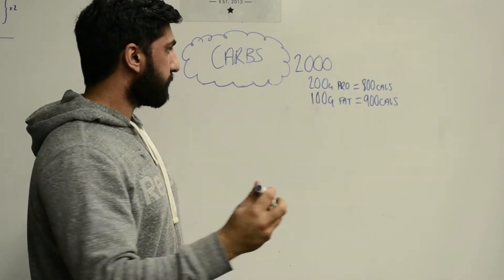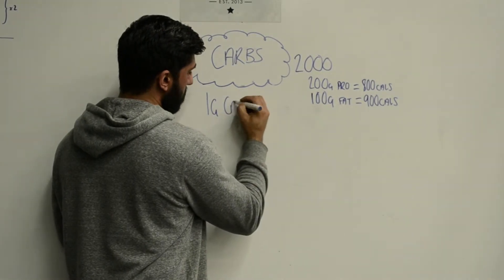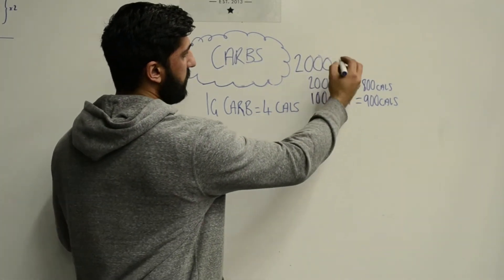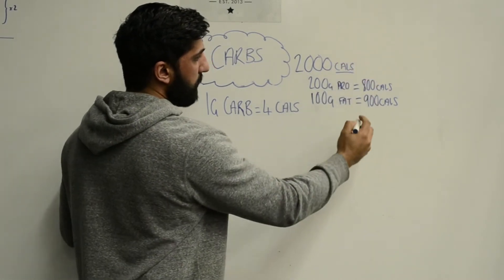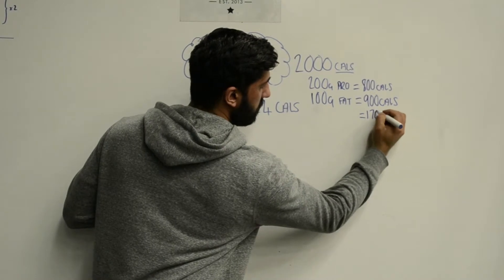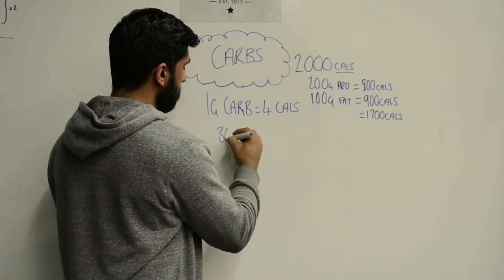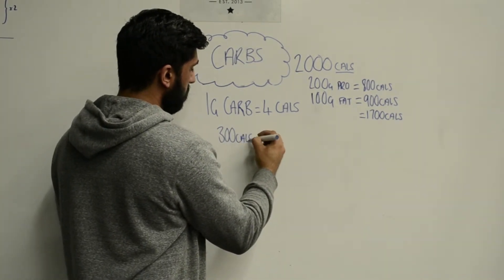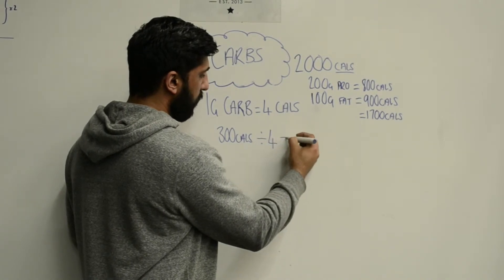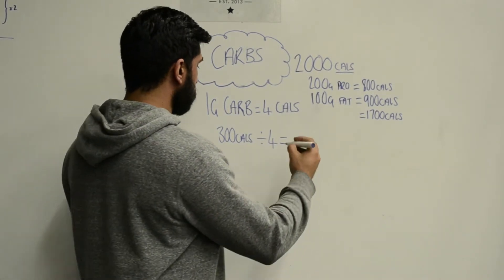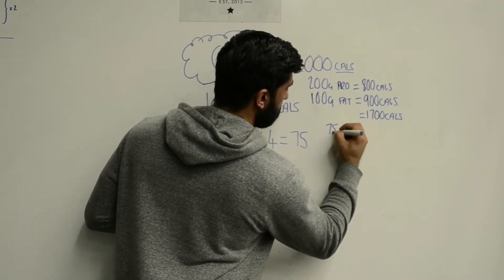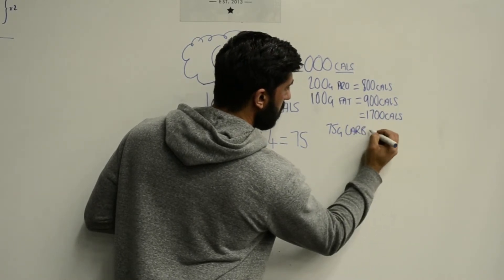To work out carbs, in every gram of carb are 4 calories, the same as protein. If we know we've got this total number of 2,000 calories, that's our target, that's our limit, and we've already used up 1,700 calories, that means we've got 300 calories left that we can use for carbs. All we need to do is divide 300 by 4 and that will give us our total calories from carbs, which is 75. That means we can have 75 grams of carbs.